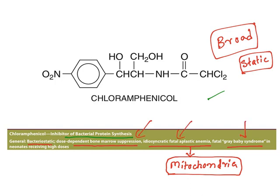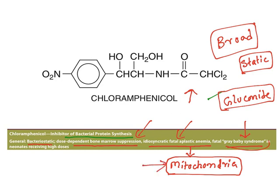In neonates especially, chloramphenicol is metabolized by glucuronide conjugation. This conjugation apparatus is not completely developed in young children. Hence, the levels of chloramphenicol increase and may inhibit mitochondrial protein synthesis, resulting in fatal gray baby syndrome. So the use of this drug is restricted because of such adverse effects.